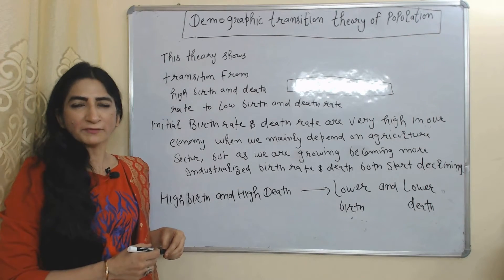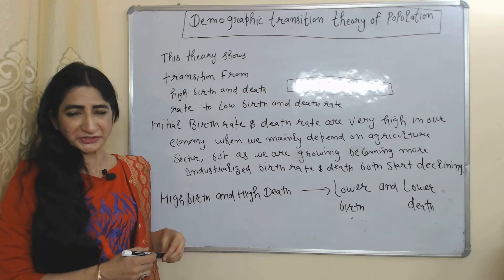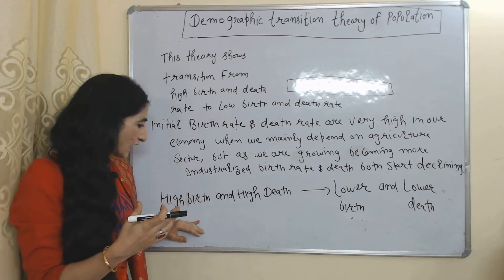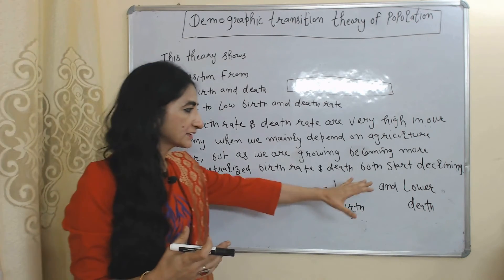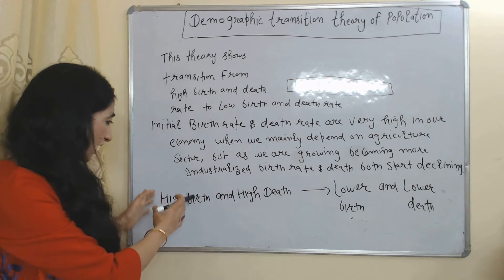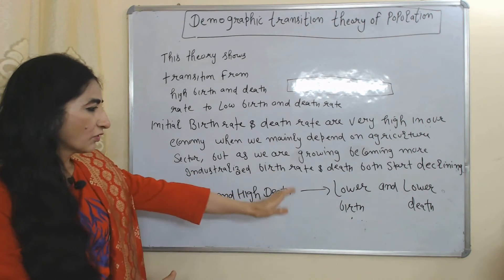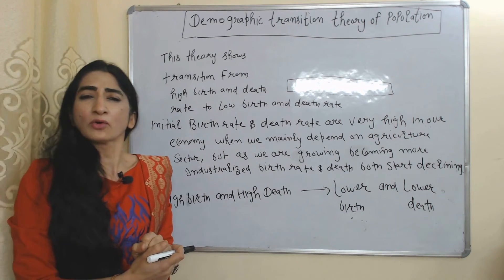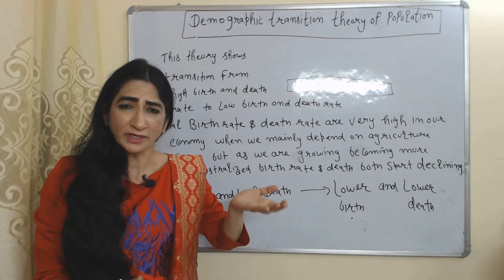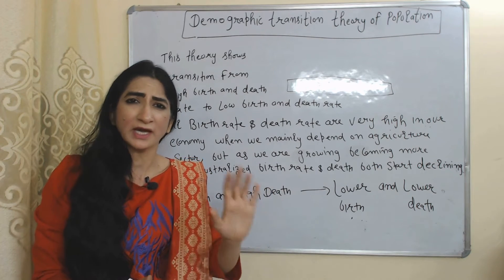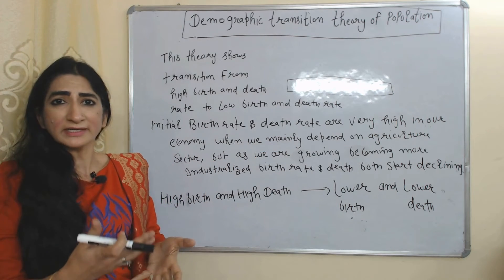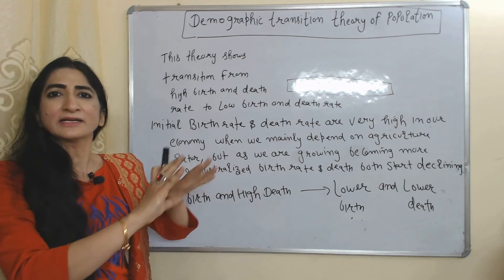Now we will see the demographic transition theory of population. This theory mainly shows the transition from high birth rate and high death rate to lower birth rate and lower death rate. Initially birth rate and death rate are very high because economic growth is very low and we are mainly dependent on the agriculture sector. But as we grow and become more industrialized, birth rate and death rate both start declining.